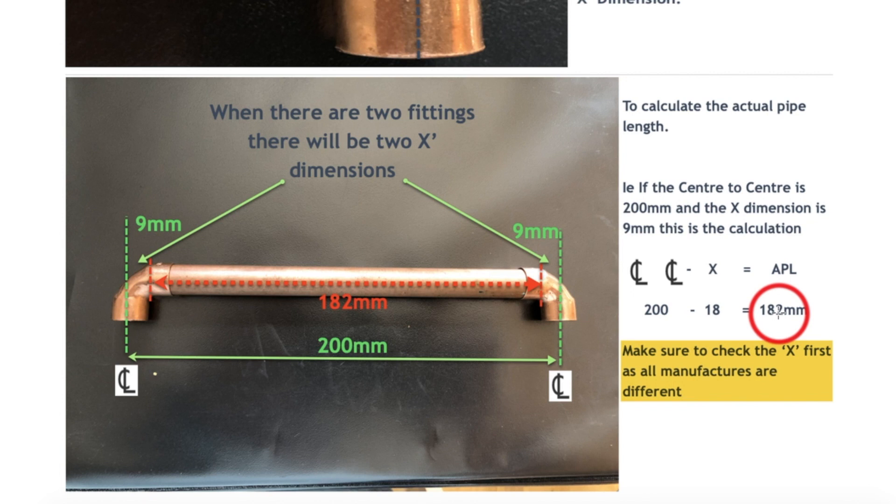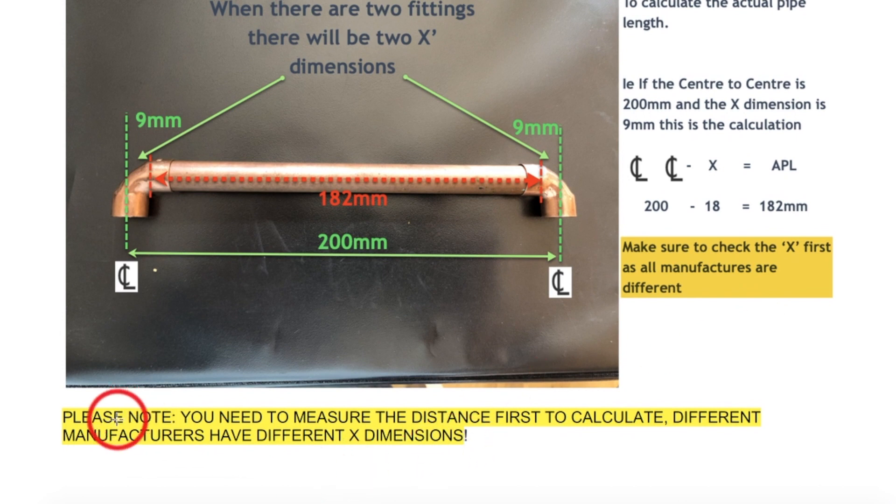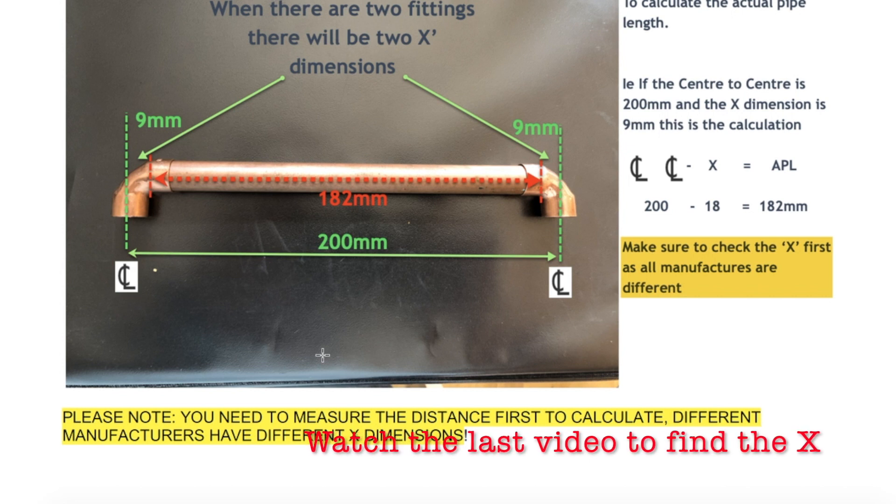Doesn't sound an awful lot, 18mm, but it is if you keep doing loads of work. As a footnote: please note you need to measure the distance first to calculate, as different manufacturers have different X dimensions. In the workshop lately, we've been using a different fitting that has a dimension of 7.5 millimeters, which is the radius of the 15mm pipe.